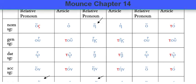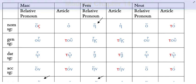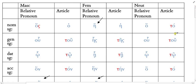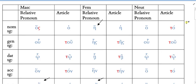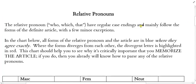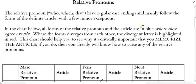We're looking at Mounts Chapter 14 on relative pronouns. Relative pronouns are used to introduce relative clauses. It wouldn't be a bad idea to remind ourselves what relative clauses are. Relative clauses are clauses introduced by the words who, which, or that. For example: I know the man who came to dinner. This is the pencil that fell on the ground. I love the woman whom Michael Horton had dinner with.